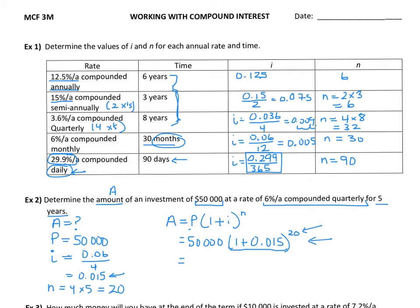So BEDMAS says brackets, then exponent, so that to the exponent of 20. And then I'm going to multiply that by 50,000. And I get $67,342.75.